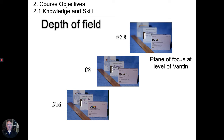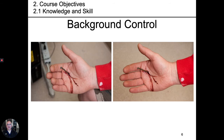We learn that aperture, lens focal length, and camera-to-subject distance all affect the depth of field. You will learn how to control the background to avoid distracting elements in a photograph that draw attention away from the subject.